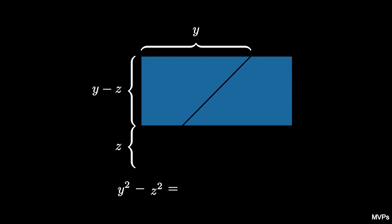The rectangle has side length y minus z and the other side length is y plus z. Therefore, the original area of y squared minus z squared is the same as the product of y plus z and y minus z. This formula is known as the difference of squares formula.